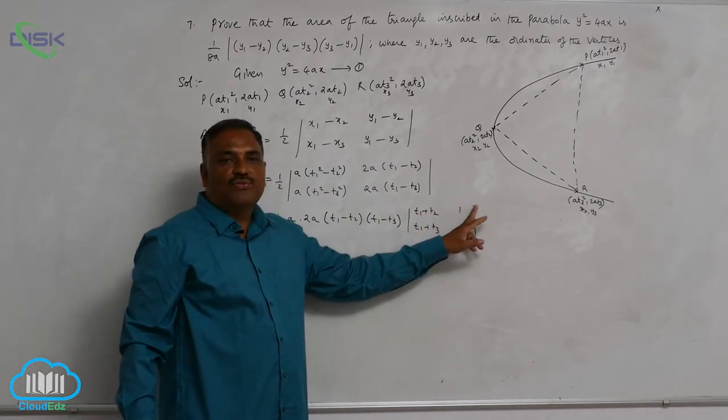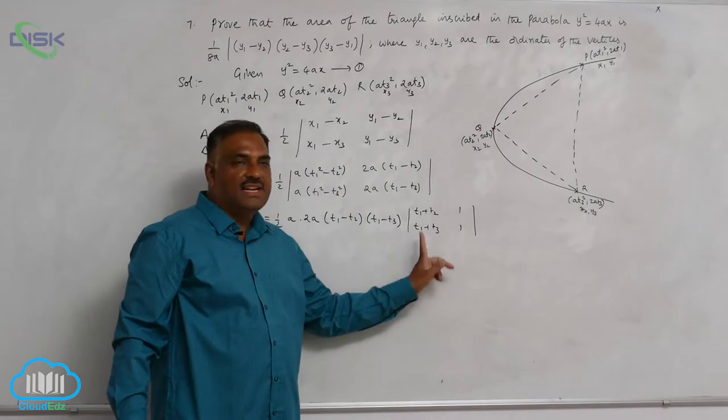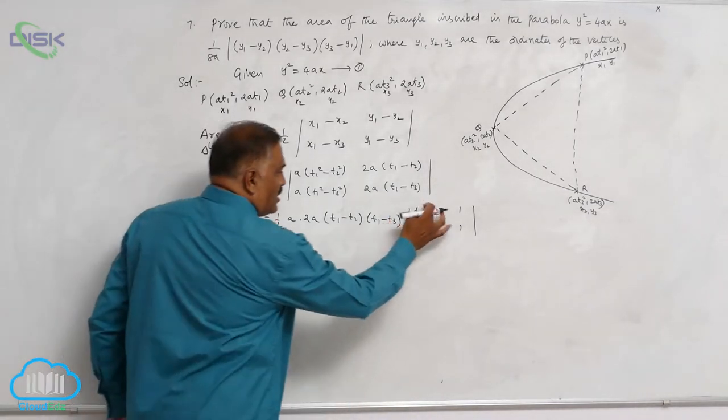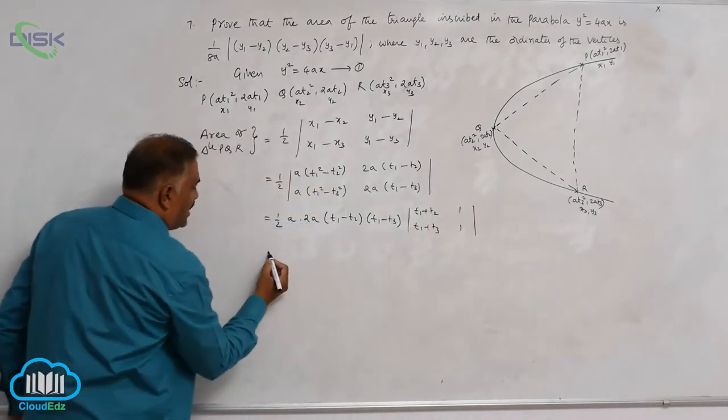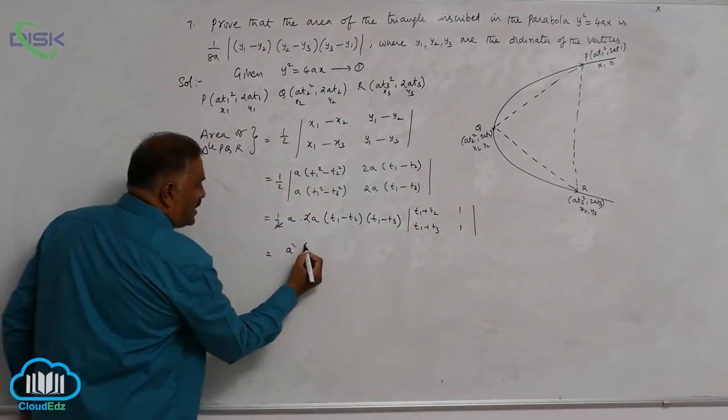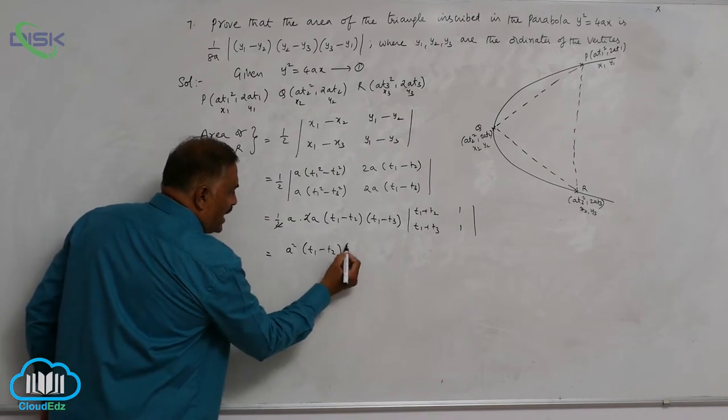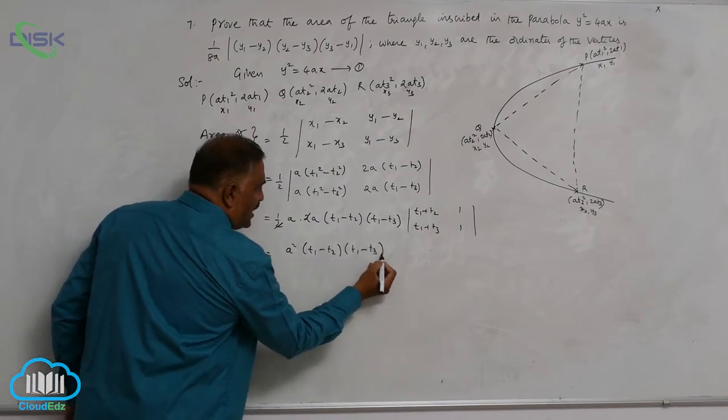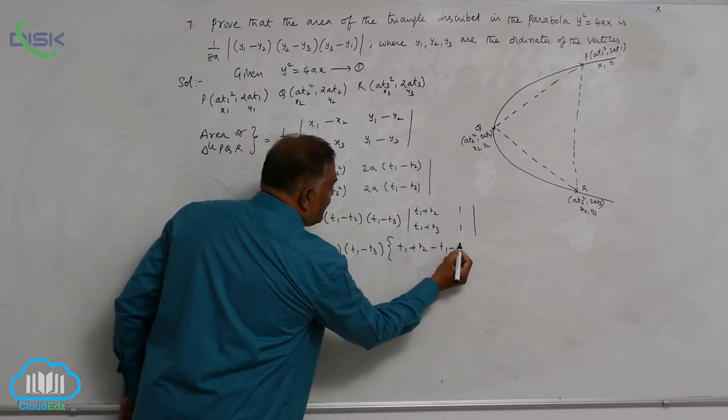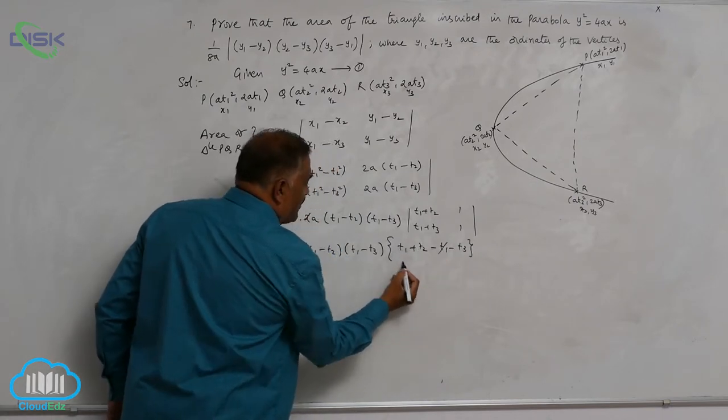We know determinant of 2 by 2 matrix a, b, c, d is nothing but ad minus bc. So, this into this minus this. So, 2 gets cancelled here. A² into t₁ minus t₂ into t₁ minus t₃ into t₁ plus t₂ minus t₁ minus t₃. t₁ gets cancelled.